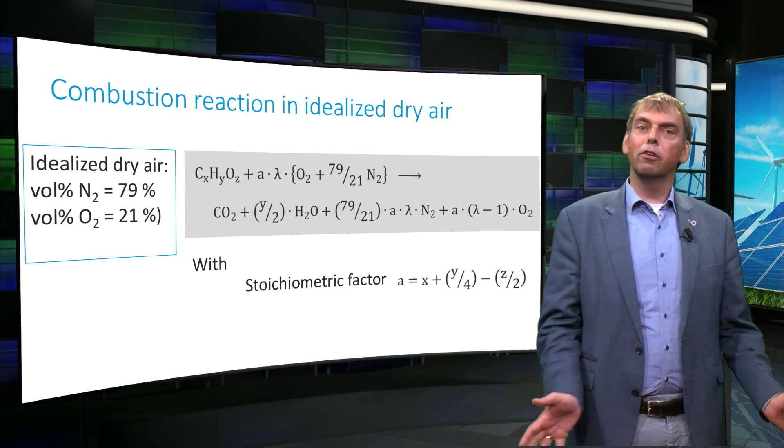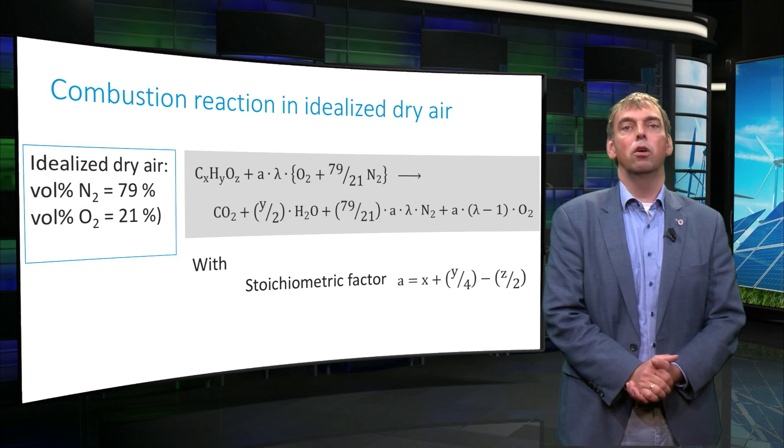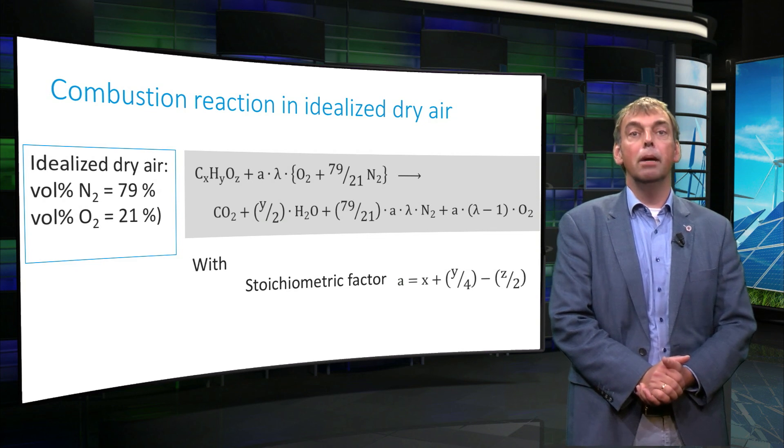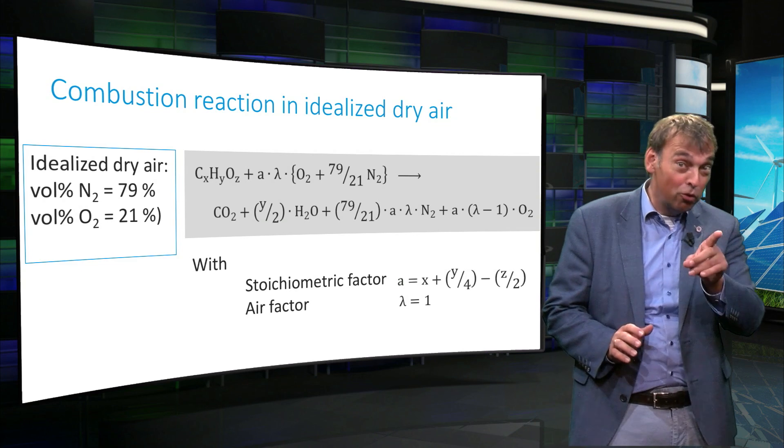The stoichiometric factor A can be calculated based on a balance for O atoms, for the case that lambda is 1. This I leave as an exercise for you to perform.